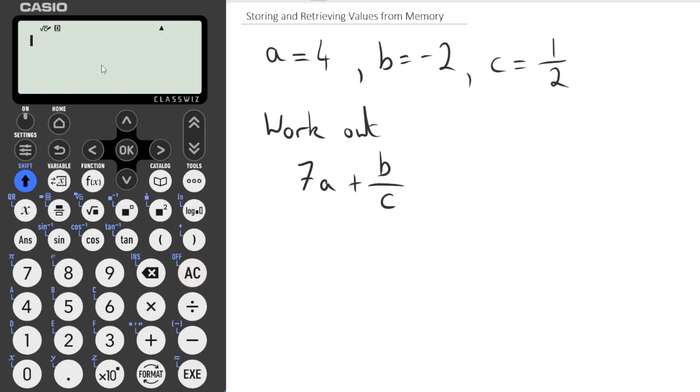And then to do it, I can access the variables through the blue shift values. So I can type in 7 and then shift A plus and then my fraction, shift B over shift C. And it will do the calculation for me very, very straightforward.